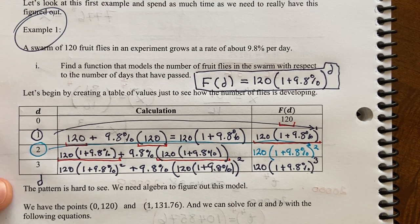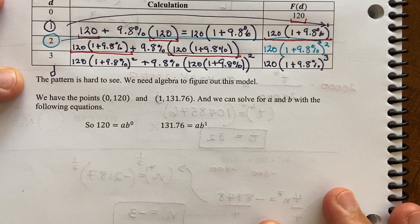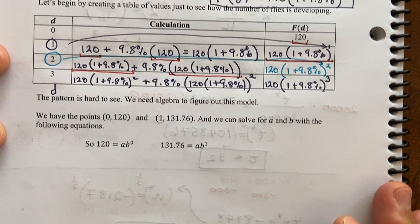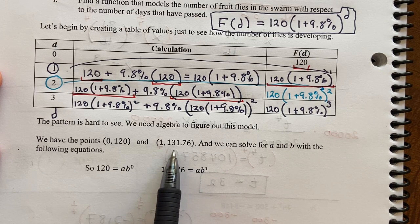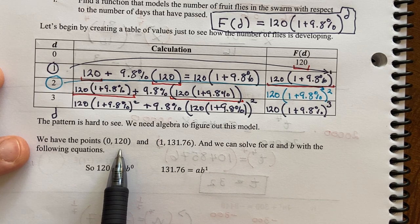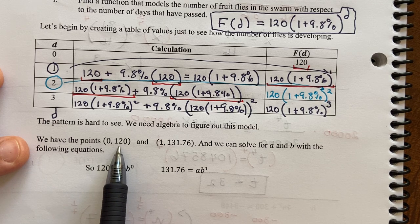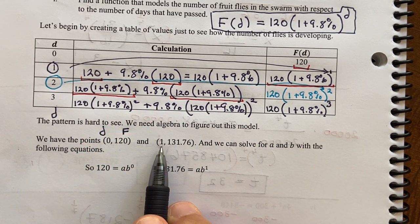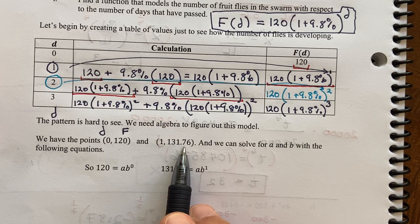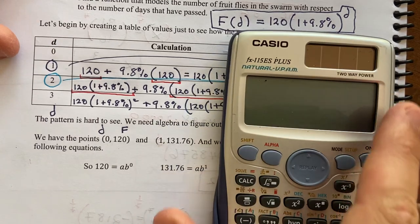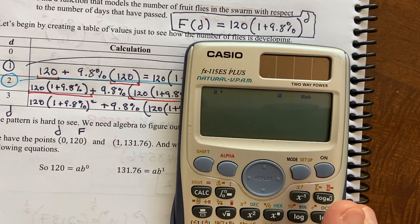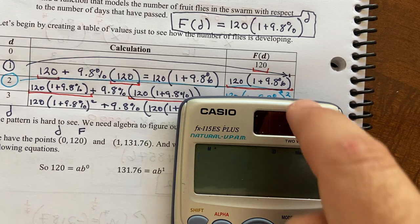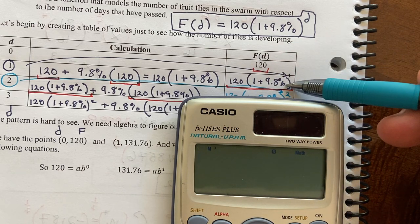Let's just look at another way. If you choose to do this a different way, you can look at actual points. We have that at zero days, there are 120 fruit flies. And after one day, there are 131.76. That's a theoretical value. You can't really have 0.76 of a fruit fly, but that's what the math would suggest.